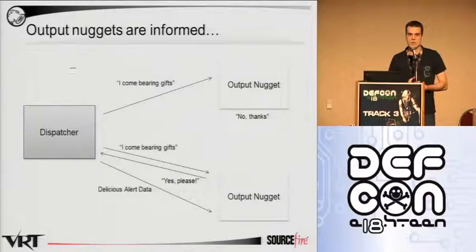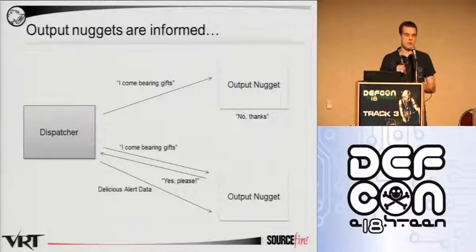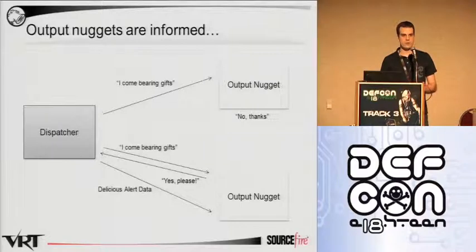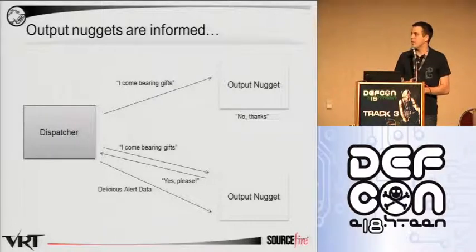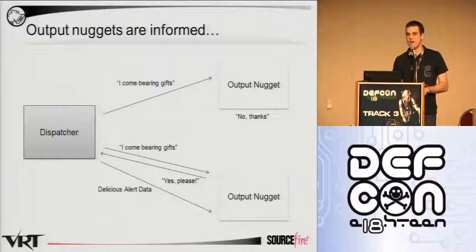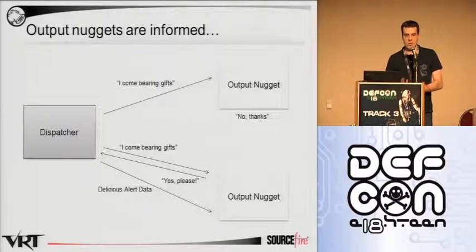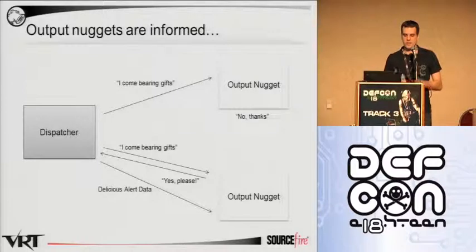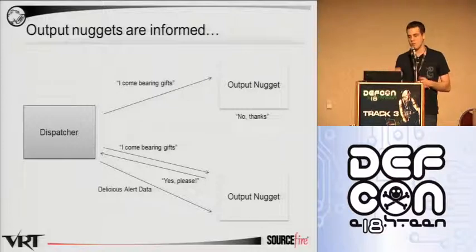Finally, when incoming alert information is available, a message is sent from the dispatcher to all available output nuggets. Those output nuggets may or may not be interested in that information — maybe they're only looking for alert data of a certain format, or for a specific file. If they're not interested, they just ignore the message. If they are, a message is sent back indicating what kind of information they want: long versions of the data, normalized data, the timestamp, source IP. The dispatcher packages all that information up for the output nugget, which is then responsible for formatting it the way it's designed to do.